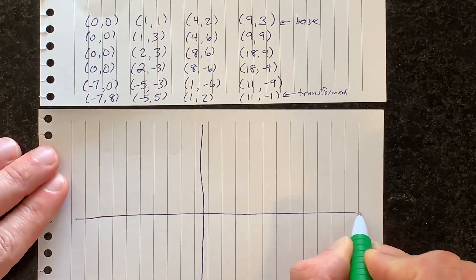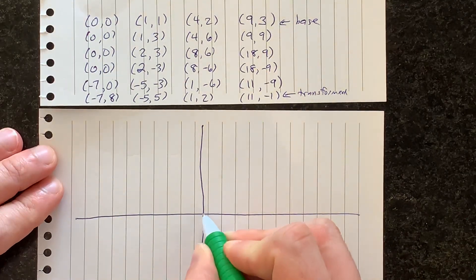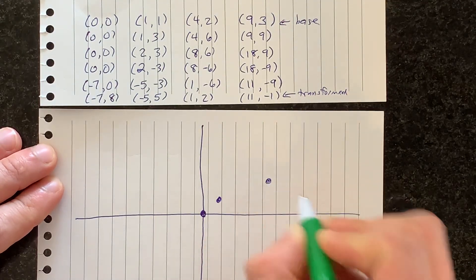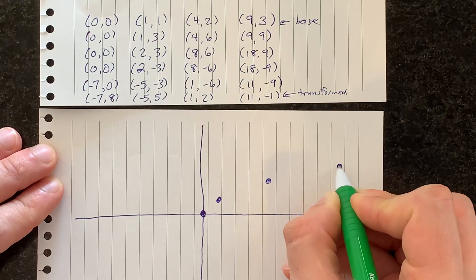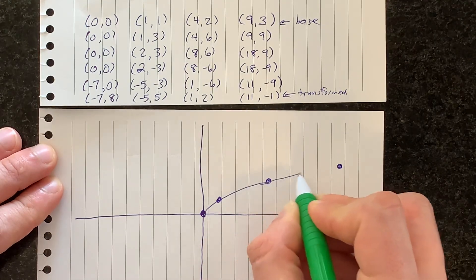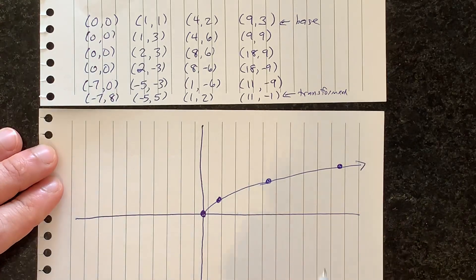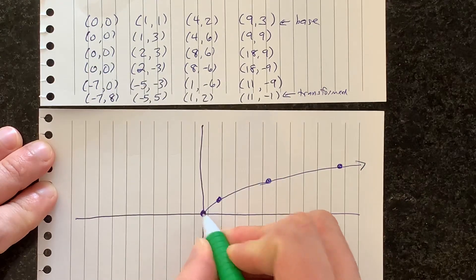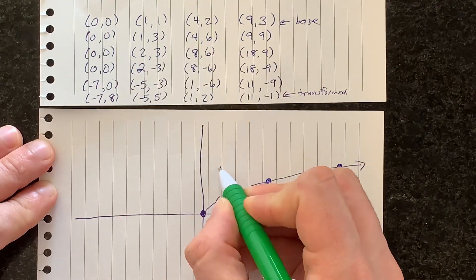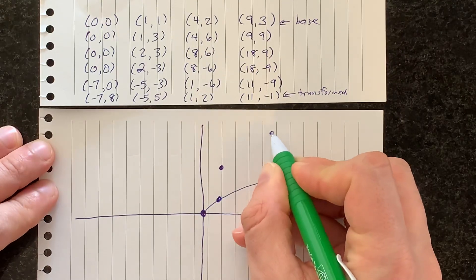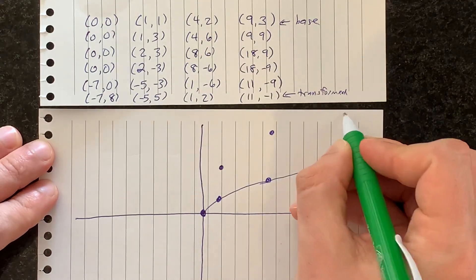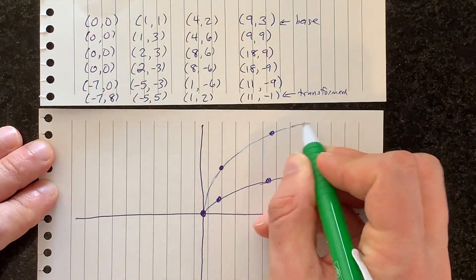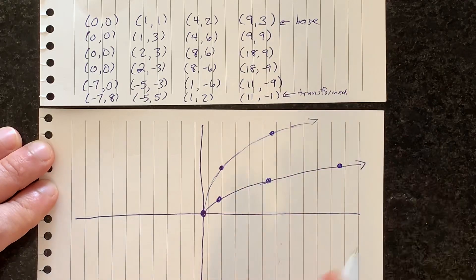I'm going to put a point at (0,0), (1,1), (4,2), and (9,3) for my base curve. If you don't recognize this as the square root function, I don't know what you've been doing with your life. The next curve I would draw starts at (0,0), goes to (1,3), (4,6), and (9,9) — that's off the graph — and you'll notice this is the same thing but it's been stretched vertically, taller by a factor of three.